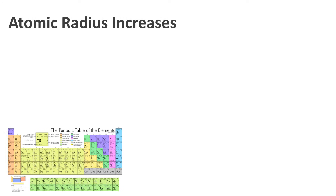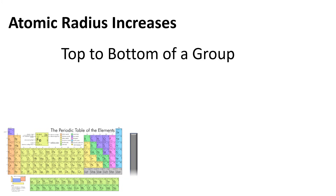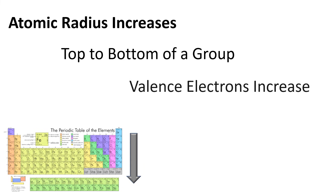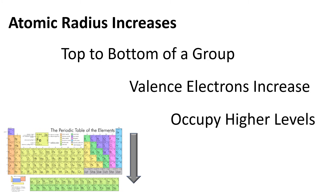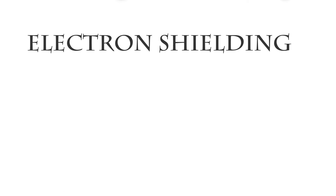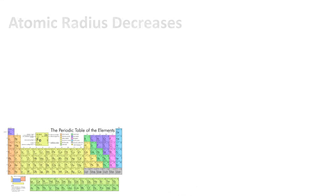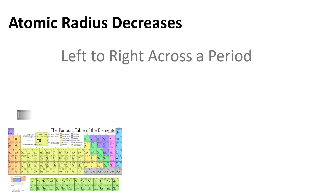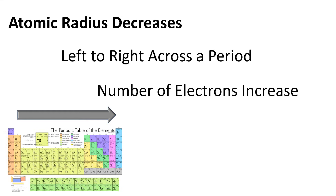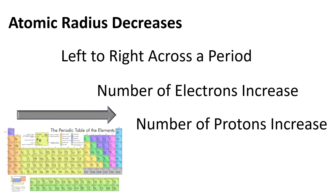The atomic radius increases as you go from the top to the bottom of a group, because the number of valence electrons increases. These electrons occupy higher levels because of their quantum numbers, causing the valence electrons to be further away from the nucleus, resulting in a bigger radius. Electron shielding prevents the outer electrons from being attracted to the nucleus and results in a larger atomic radius because the electrons are held more loosely. The atomic radius decreases as you go from left to right across a period — even though the number of electrons increases, so does the number of protons, and one proton has a stronger effect than one electron, so the electrons are held more tightly, resulting in a smaller radius.